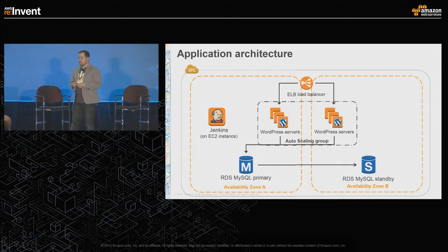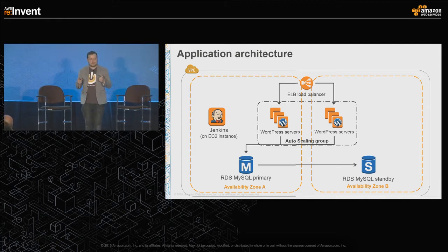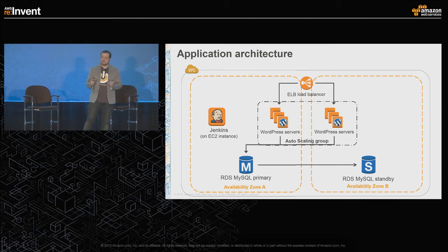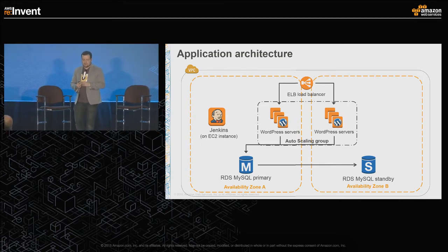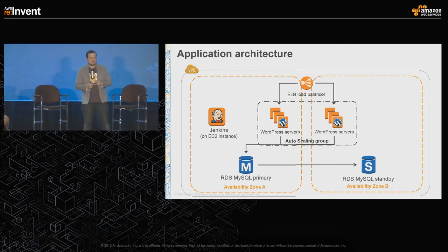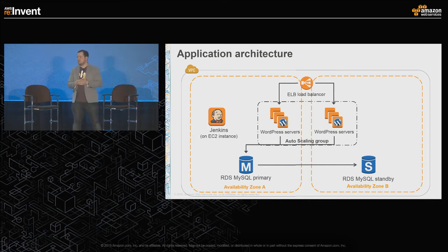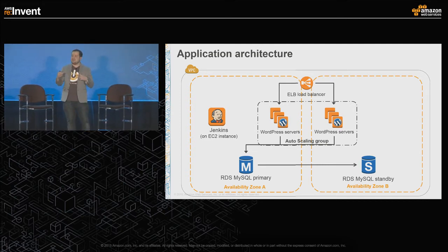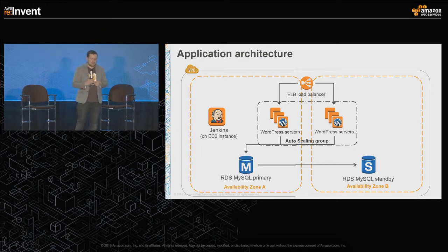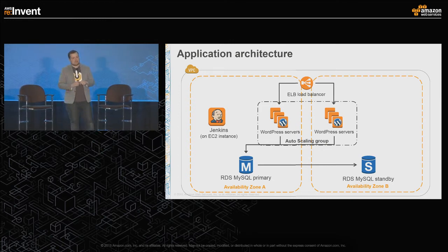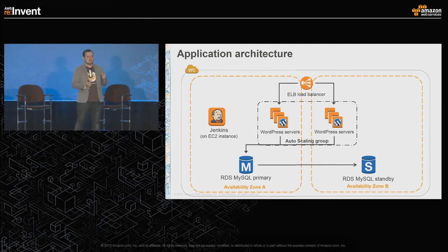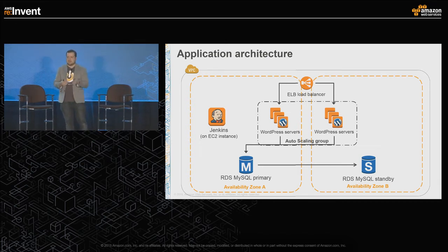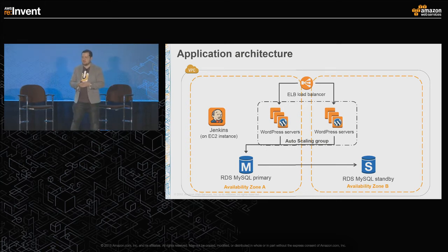For my WordPress architecture, I have an ELB serving traffic, attached to an auto-scaling group across two availability zones. I have a Jenkins instance running off to the side — not serving production traffic. For high availability, I'd turn on EC2 auto-recovery on Jenkins. My database tier uses a multi-AZ RDS instance with MySQL. I also have the WP Cache plugin offloading static assets to S3, backed by CloudFront as a CDN, and ElastiCache with Memcached for caching.